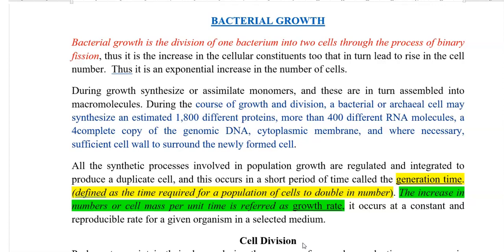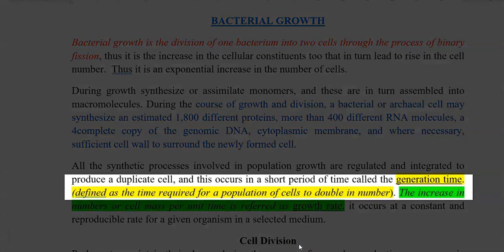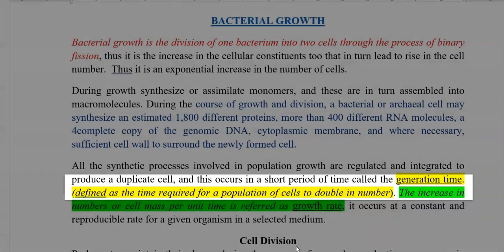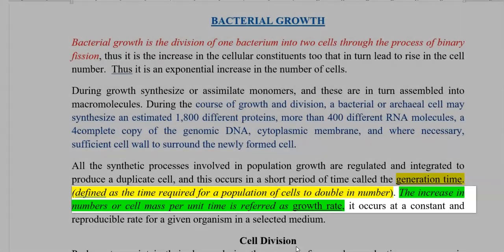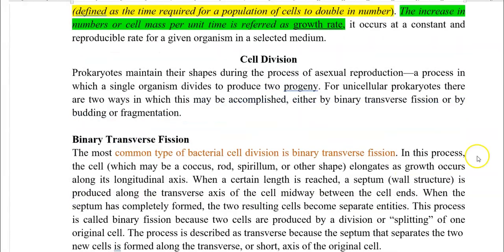Next, we look at certain key terms. Generation time is defined as the time required for a population of cells to double in number. Growth rate refers to the increase in cell numbers or cell mass per unit time.